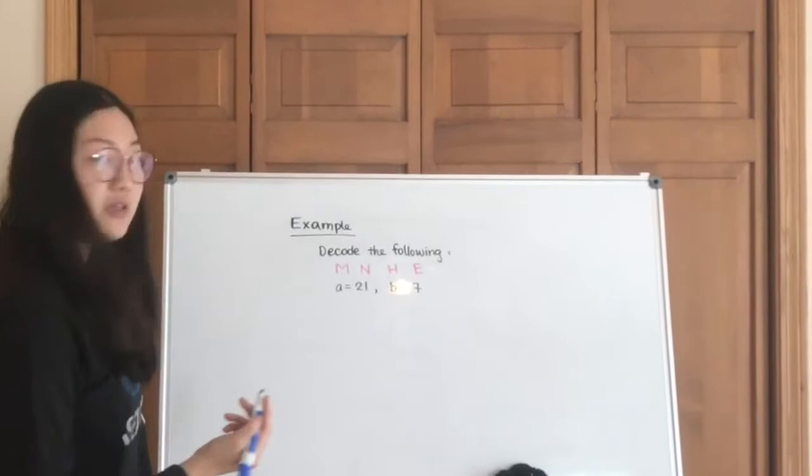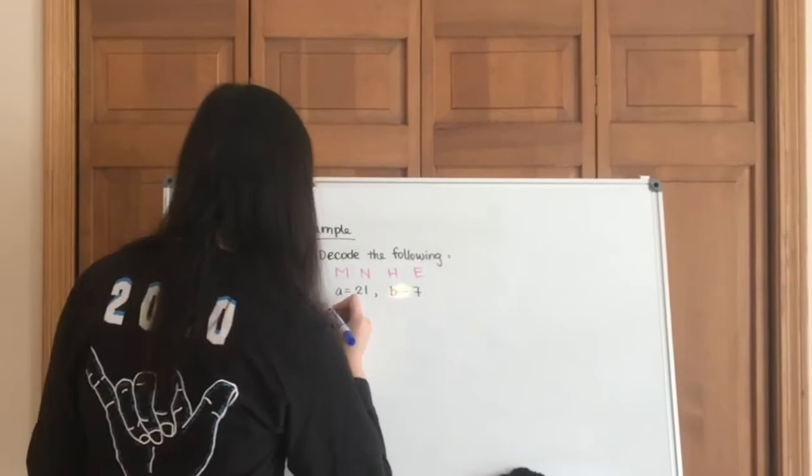So here's an example. We're going to decode MNHE with 21 comma 7. So let's take care of the toughest part first, which will be finding the inverse of a.